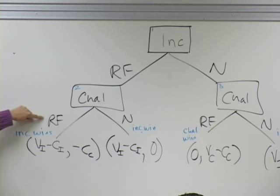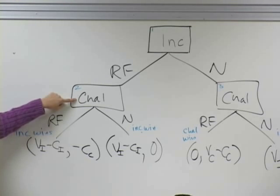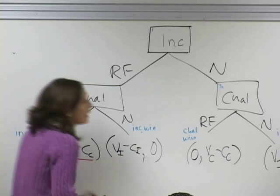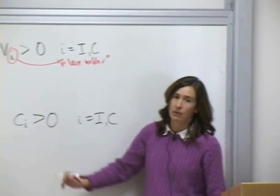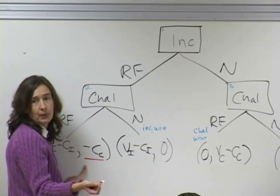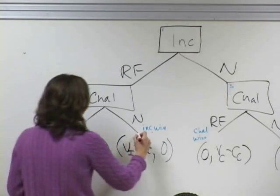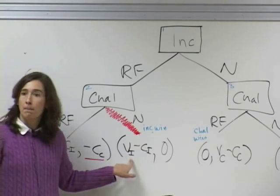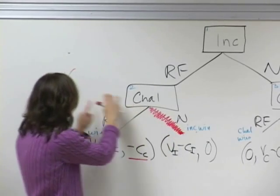At node two, which is a challenger node, what is the challenger going to do? Not raise funds—same as before. We know this because by assumption CC is a positive number. Those costs are really costs; we really don't like fundraising. Given a choice between a baseline of zero and a negative number, we'd rather have zero. Copying the payoff associated with the branch we expect to be chosen up to node two—this is called the strategic equivalent. I'm replacing this node with its strategic equivalent.